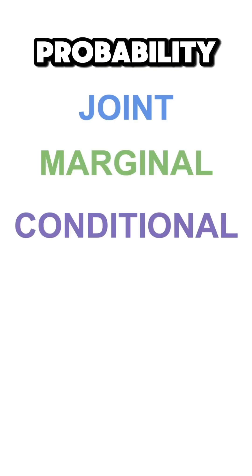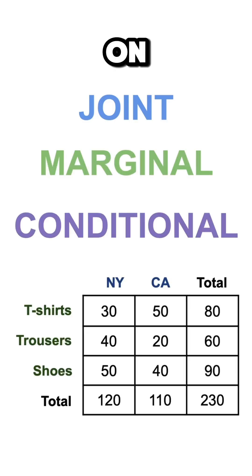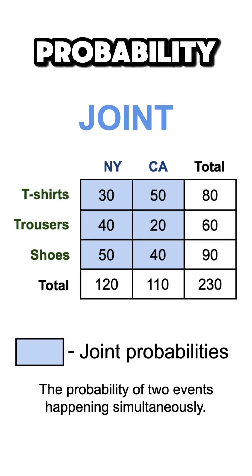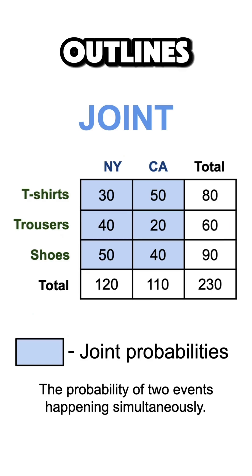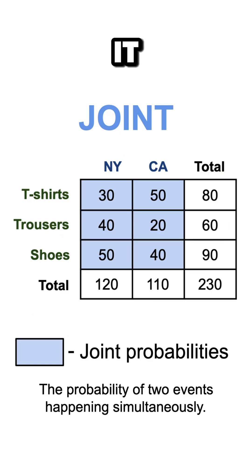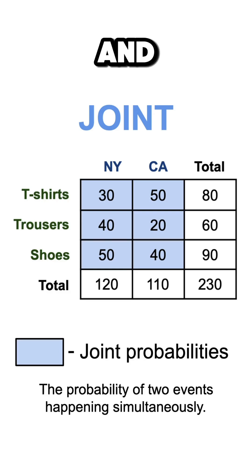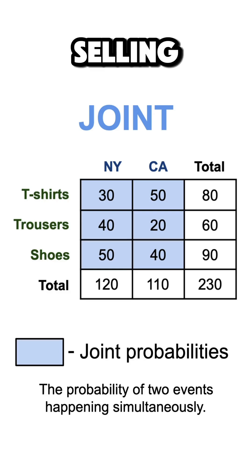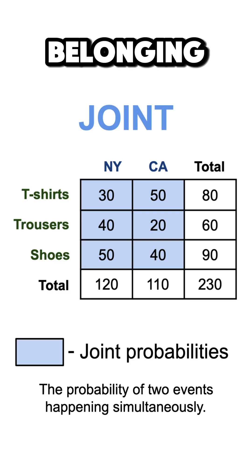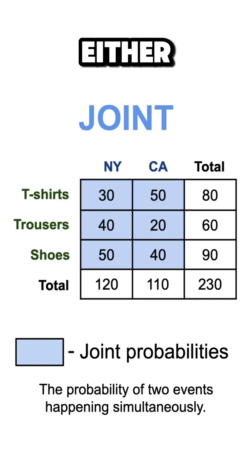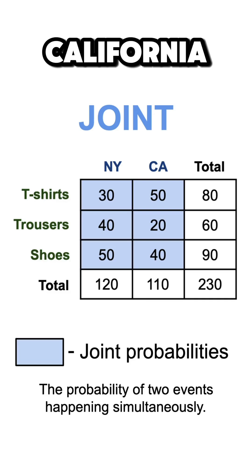What's the difference between the joint, the marginal, and the conditional probability? On one hand, we have the joint probability, which outlines how probable it is for two separate events to occur together. In this case, it's represented by the probability of selling a piece of clothing and it belonging to either New York or California.